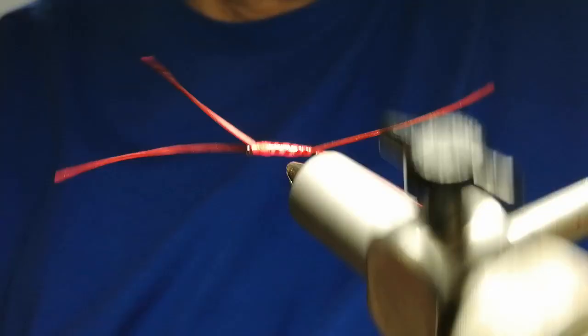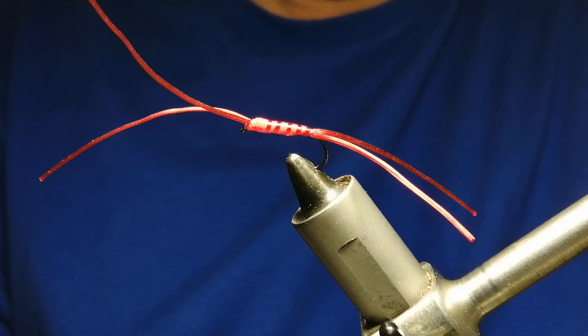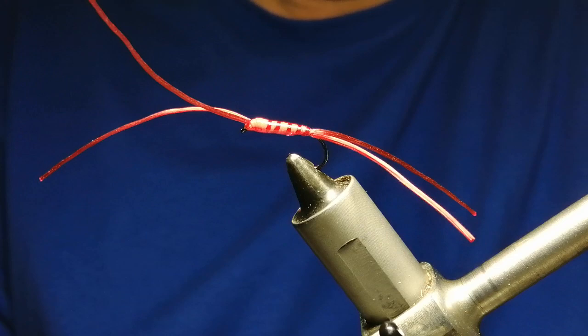And there you have it. The Aps bloodworm, also called a brandling. If you like it, get them tied up. Guarantee you'll catch lots of fish throughout the winter with it. Check the other flies on my YouTube channel if you don't mind and subscribe. Be grateful. Thanks very much. Enjoy. Cheers.